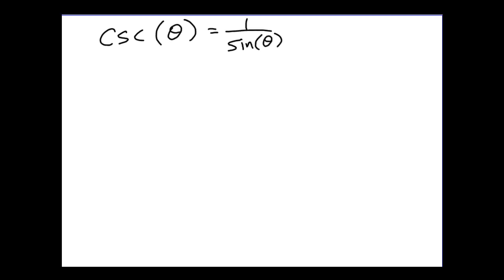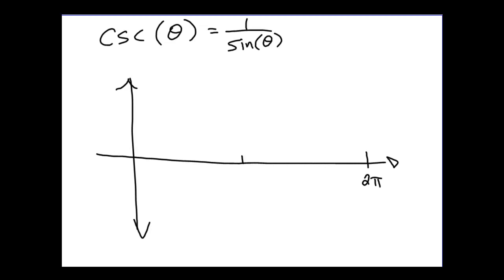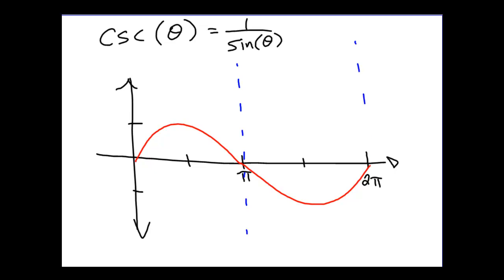Let's move on and look at the cosecant. Recall that cosecant is simply the reciprocal of the sine function. This won't take very long because we can use exactly the same reasoning we used in developing the secant graph. We'll sketch it out so you have an opportunity to look at this graph. Again, we start by graphing out the sine function. Every place the sine function has a zero, our cosecant graph will have an asymptote. So our asymptotes will be at the origin, at π, and at 2π.